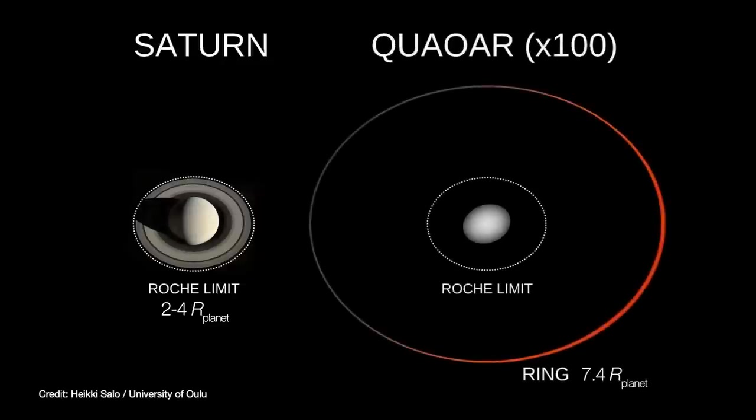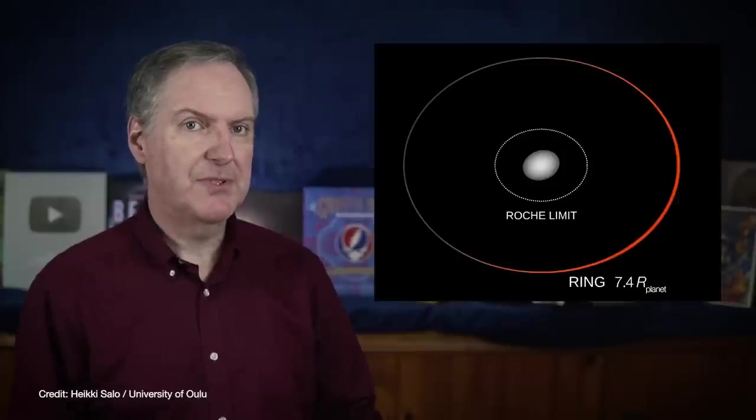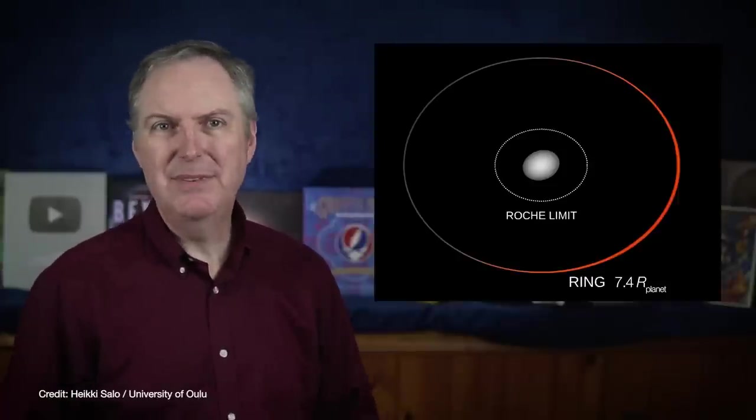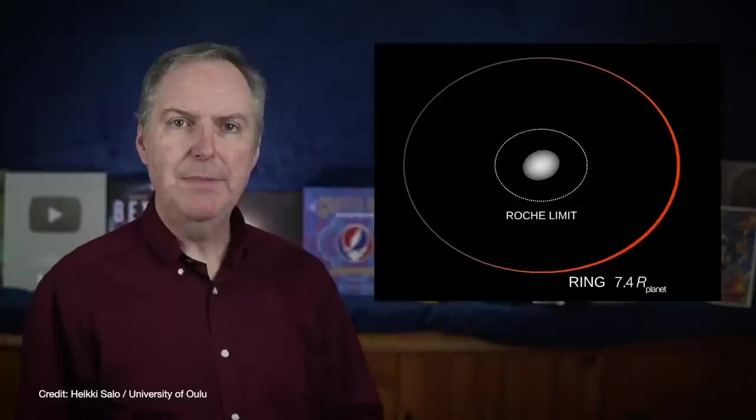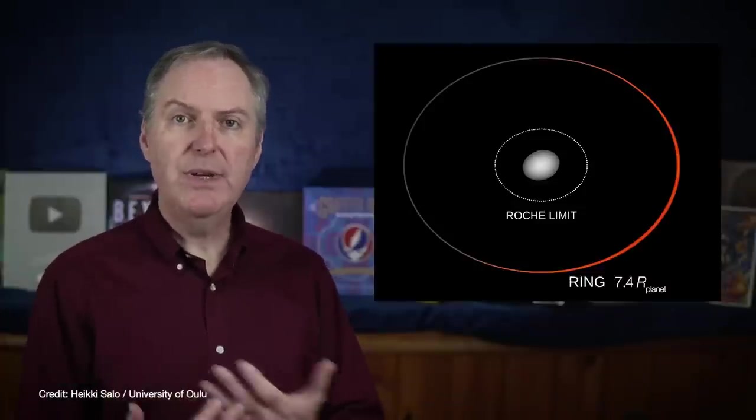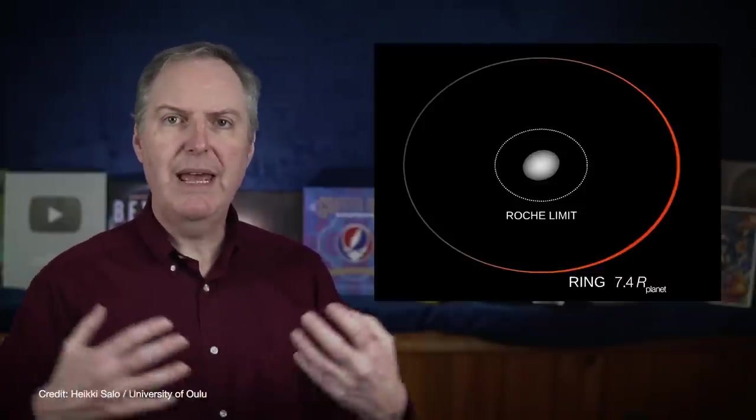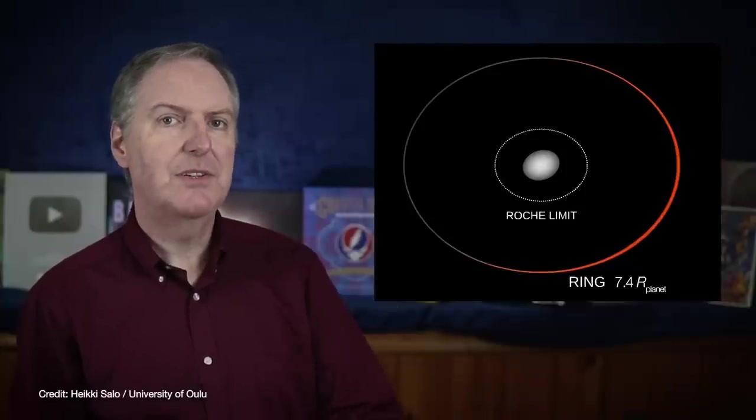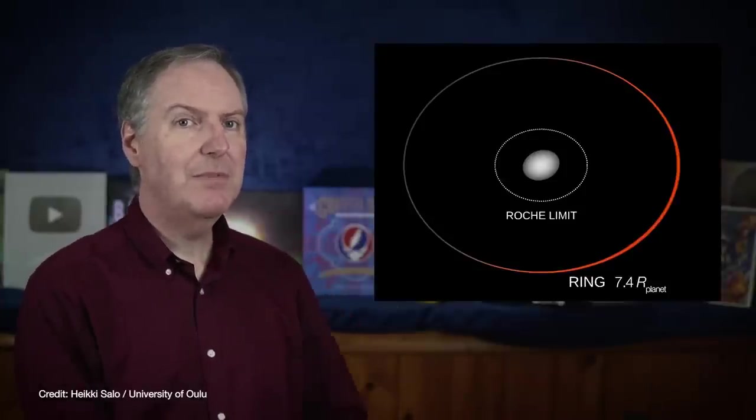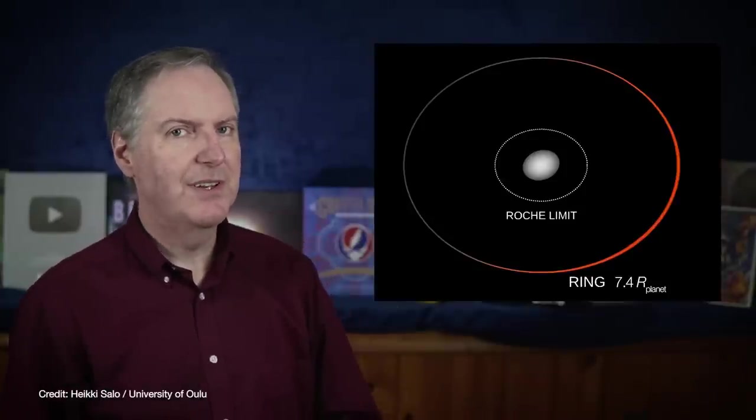Quaoar's ring, on the other hand, lies more than seven radii from the planet. Rings outside the Roche limit aren't impossible per se, but they should be unstable. At that distance, tidal forces from the planet just aren't strong enough to keep the ring shredded. So clumpy regions in the ring will eventually form and start to attract other ring particles. Those particles build into larger clumps, which keep attracting more ring particles until it eventually forms a new moon.